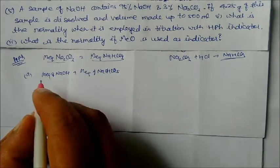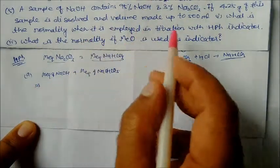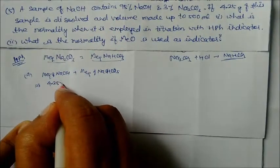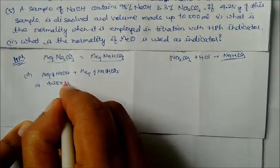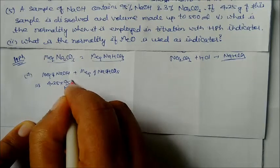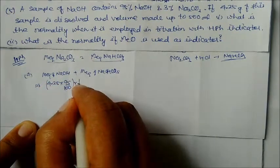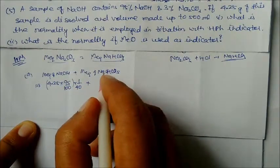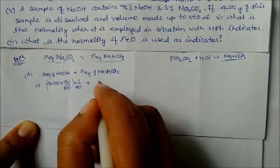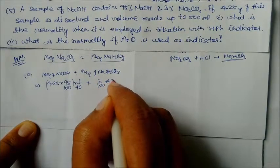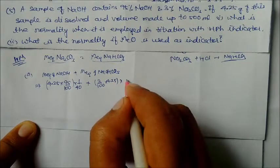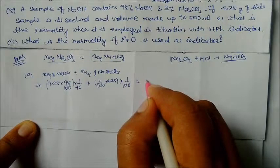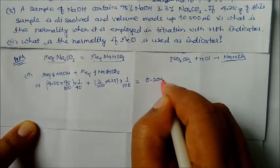We can write: milliequivalents of NaOH plus milliequivalents of sodium bicarbonate. Given 4.25 grams sample: for NaOH, it is 4.25 × (95/100) divided by equivalent weight 40. For sodium bicarbonate, 3% means (3/100) × 4.25 divided by equivalent weight 106. Solving this gives a total equivalent of 0.0204 normality.